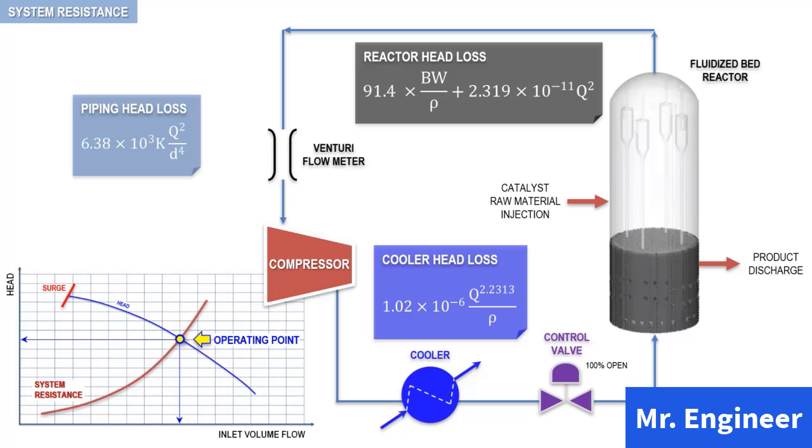So, to sum up, the system resistance in our example is the sum of the piping, the reactor, and the cooler head losses.